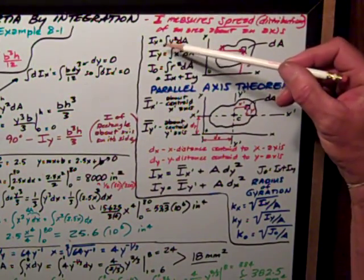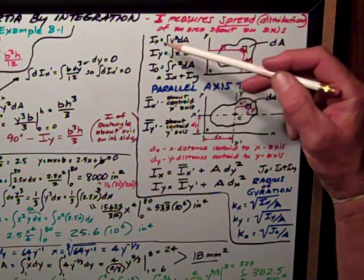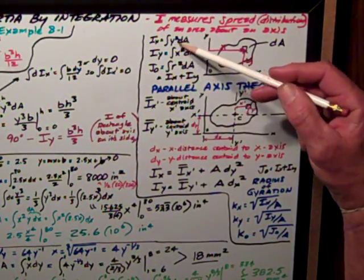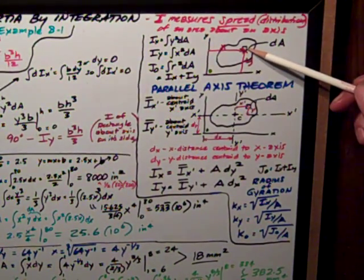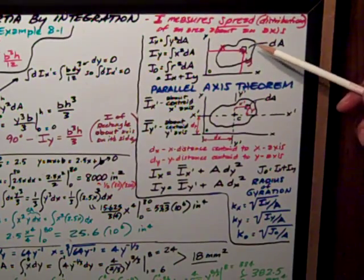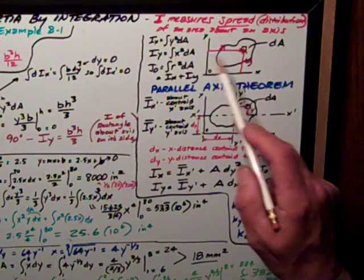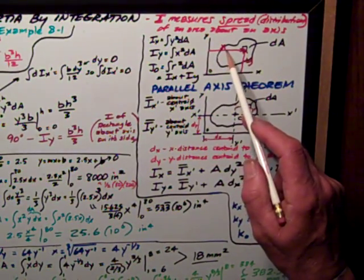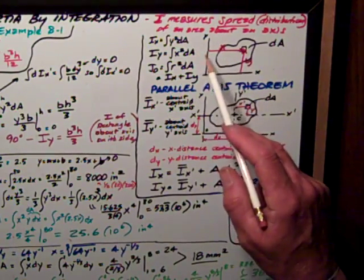We're going to define the moment of inertia as the integral of, the moment of inertia about the x-axis is the integral of y squared, that y distance squared, times dA, and integrate that over the area. Similarly, the moment of inertia about the y-axis is the integral of this x squared dA.